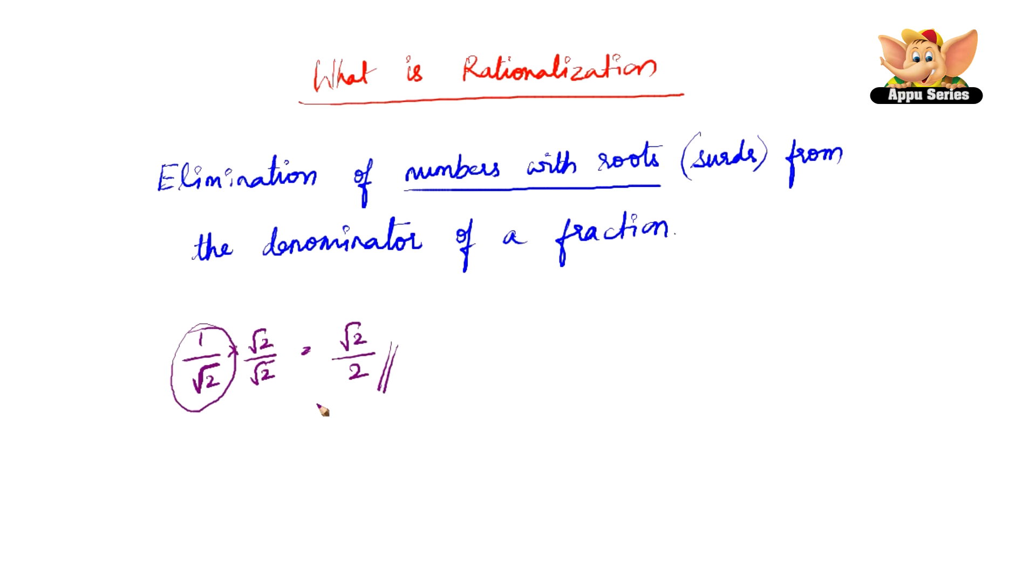One point is, now the root 2 that we took to multiply and divide 1 by root 2. This root 2 is called as the rationalizing factor.